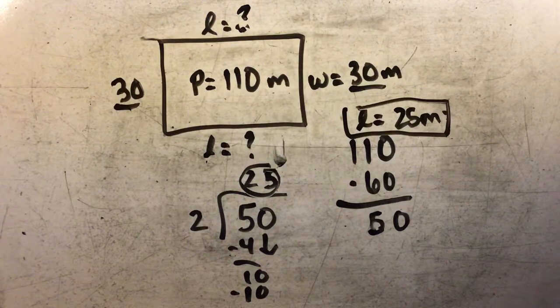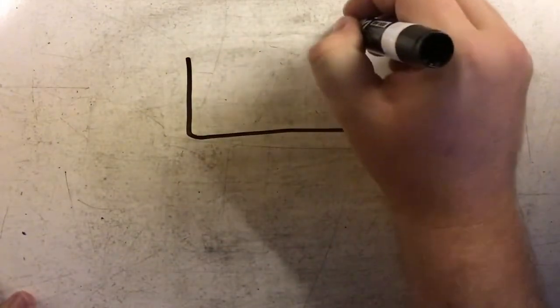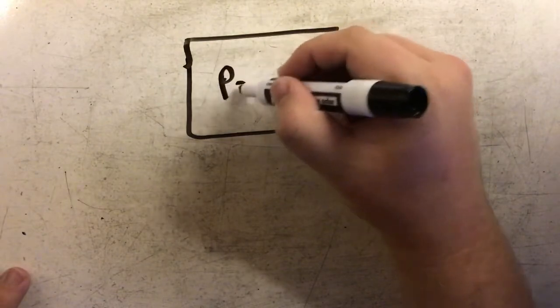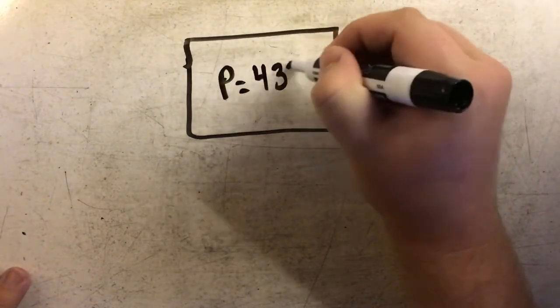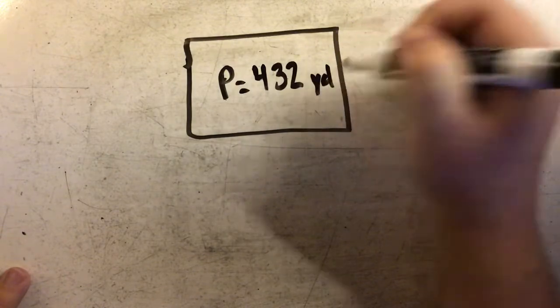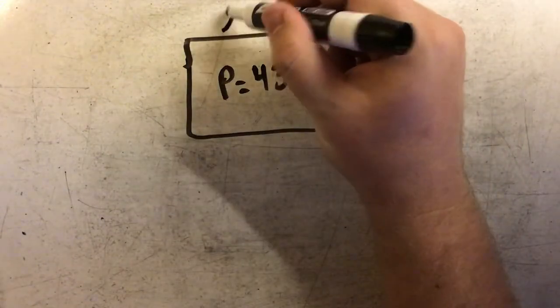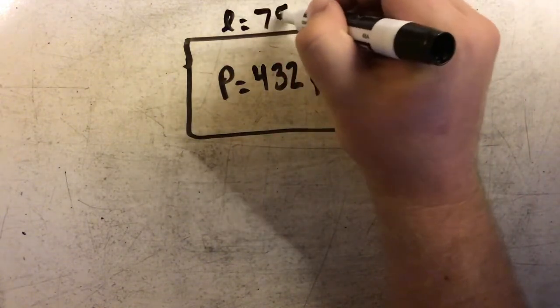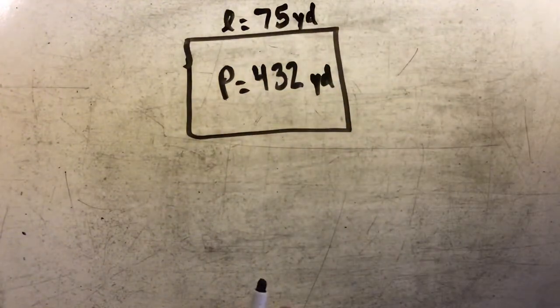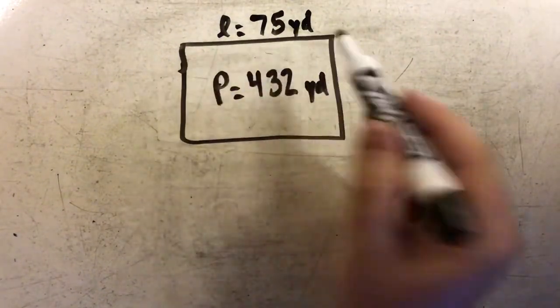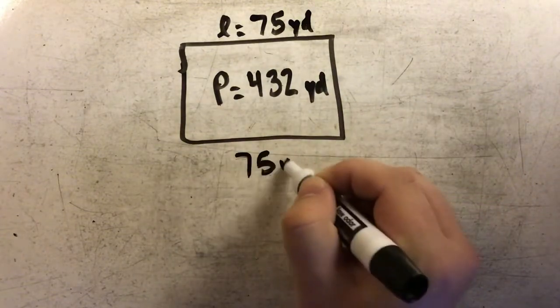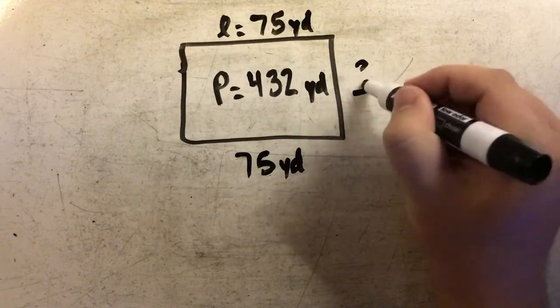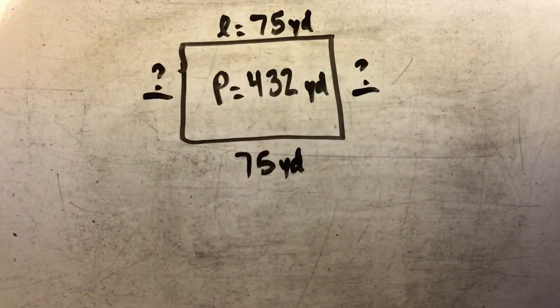Let's do one more example. In this example, our perimeter is set at 432 yards and the length of one side is 75 yards. I know that if this side is 75, this opposite side must also be 75. What I'm really trying to find are the two widths.